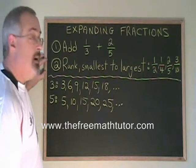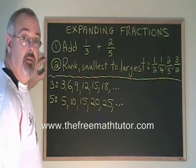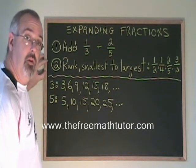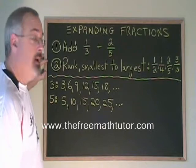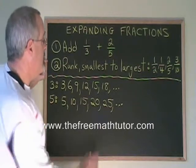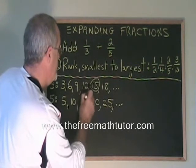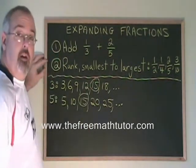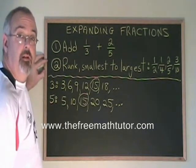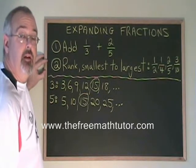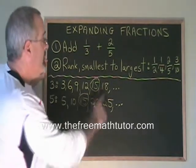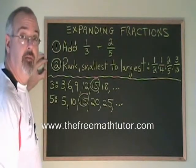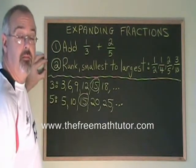The lowest common multiple of 3 and 5 is going to be the smallest number that's on both lists, which in this case is 15. If I see that there is no number that's on both lists, it means that I have to continue making the lists longer until I find a number that's on both lists.